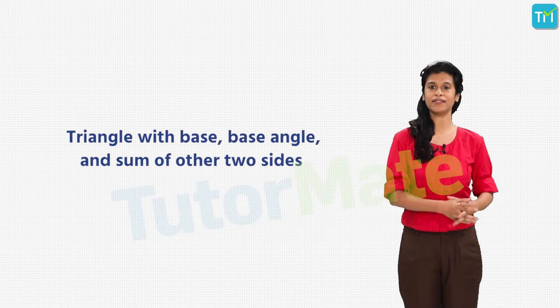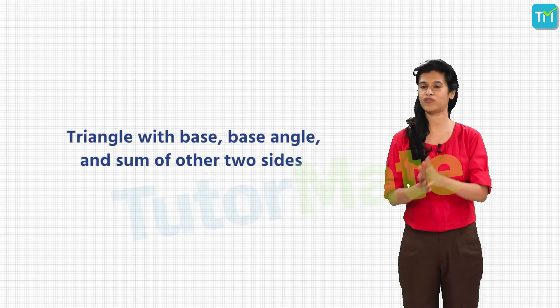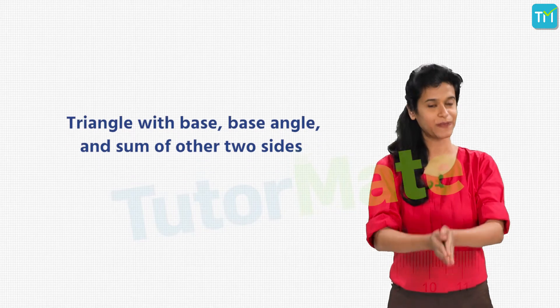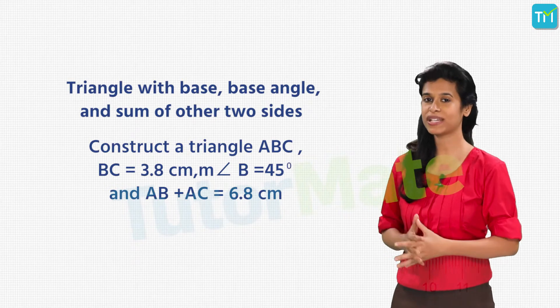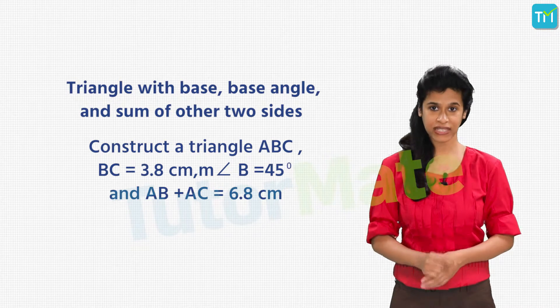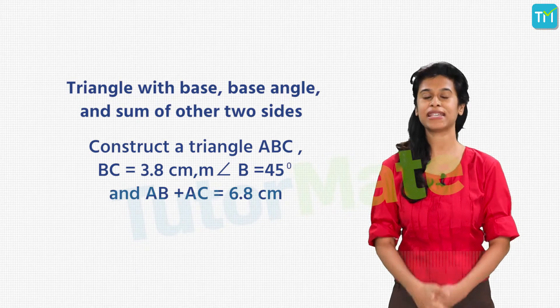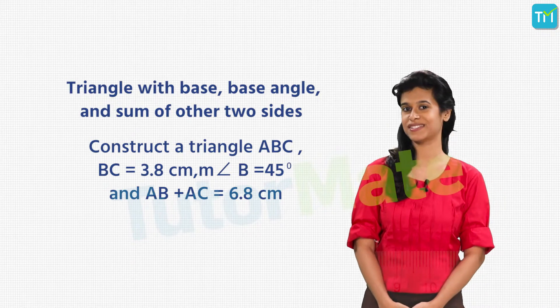Let us now try a unique and more involved construction. We draw a triangle given its base, base angle and the sum of the other two sides. So, here is the problem. Construct a triangle ABC where BC measures 3.8 centimeters with angle B measuring 45 degrees and the sum of sides AB and AC equal to 6.8 centimeters. Ready?